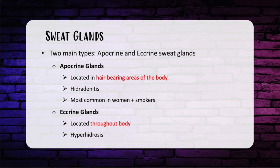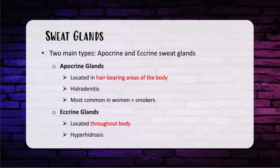Before the rapid fire round, let's highlight sweat glands, as this appears in question stems. There are two main types: apocrine glands and eccrine glands. Apocrine glands are located in hair-bearing areas like the groin and axilla, and secrete watery fluid rich in protein. The sweat is initially odorless but can become malodorous if exposed to bacteria. Hidradenitis is related to the apocrine glands — it's a chronic disabling skin condition resulting in abscesses, inflammatory nodules, and draining sinuses in the axilla, groin, and perineum. It's more common in women and in smokers.